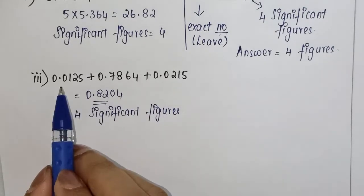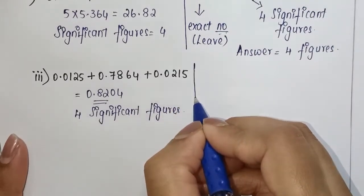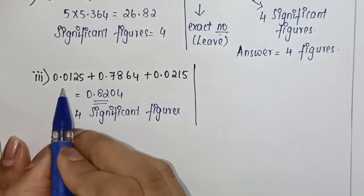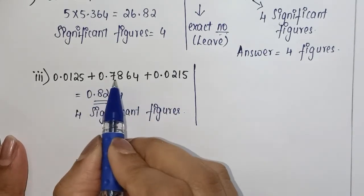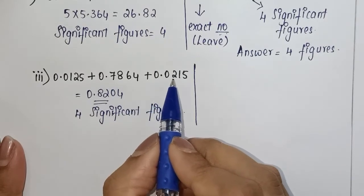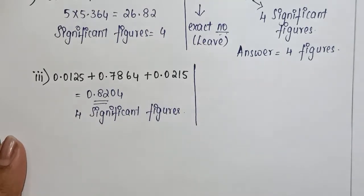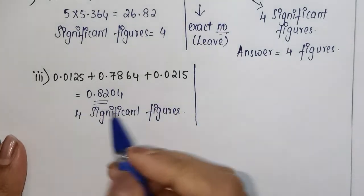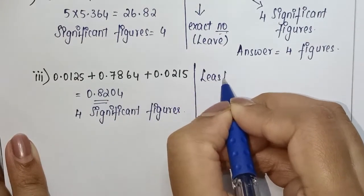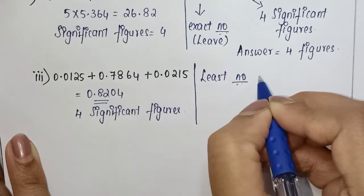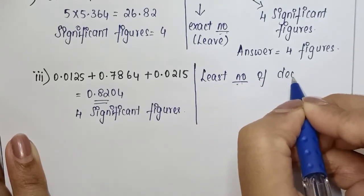In this particular question, apart from solving it normally, if you check the number of decimal places in all these, you have four decimal places, four decimal places, and four decimal places. So the least number of decimal places in each term here is four.